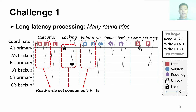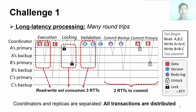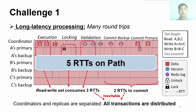We observe that the read-write set consumes three round-trip times, or RTTs, to be read, locked, and validated. DRTMH merges locking and validation into one phase, which still consumes one RTT. Moreover, the transaction requires two RTTs to sequentially commit backups and primaries. As the coordinators and backups are separated in different resource pools, all transactions become distributed. Therefore, these network round trips are inevitable since they cannot be transferred to local memory accesses. As a result, there are five RTTs on the critical path. To reduce latency, we need new schemes before and during commit.